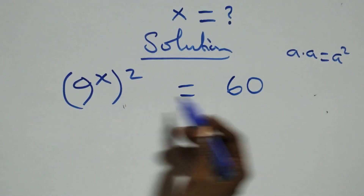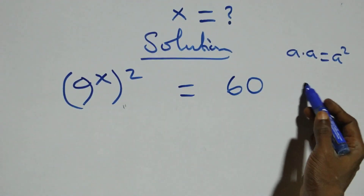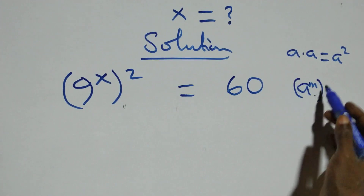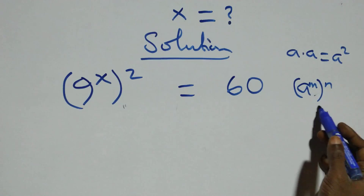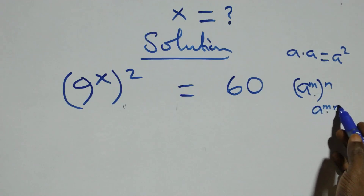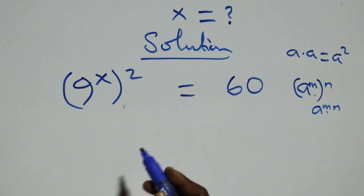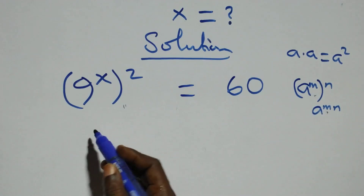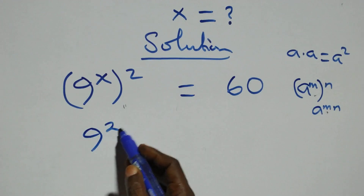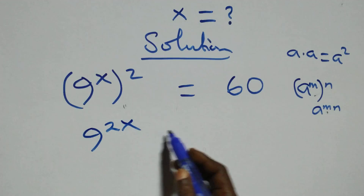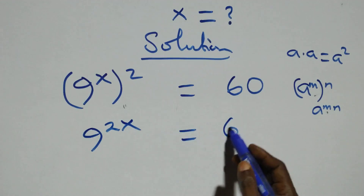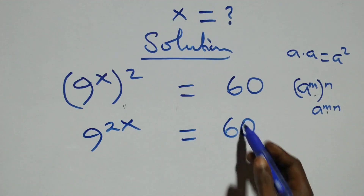This follows when we have a raised to power m, raised to power m — this is the same thing as a raised to power m times m. So this power multiplies and we have 9 raised to power 2x equals 60.